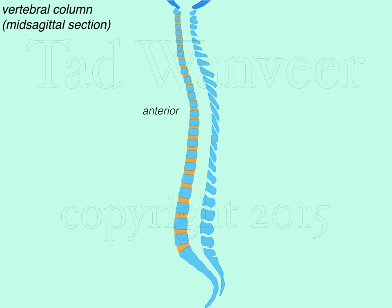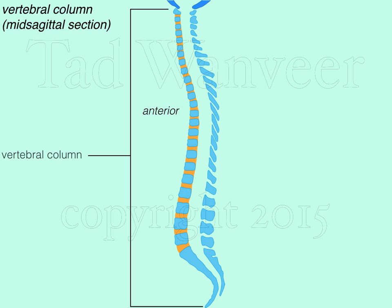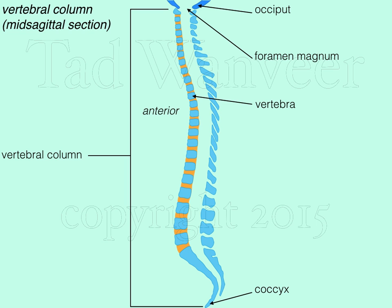This is a mid-sagittal section view of the vertebral column. Anterior is identified. The vertebral column extends from the foramen magnum, which is a large midline opening at the base of the occiput, to the coccyx. The vertebral column is comprised of individual vertebrae stacked to form a bony column. The sacrum is at the base of the vertebral column and interconnects with the coccyx. In between portions of each vertebra — the bodies of the vertebra — we find intervertebral discs.